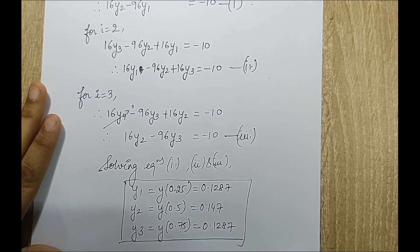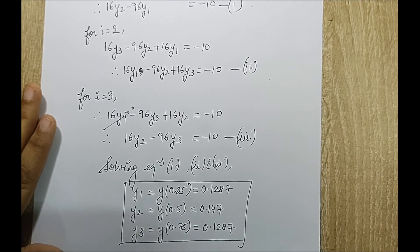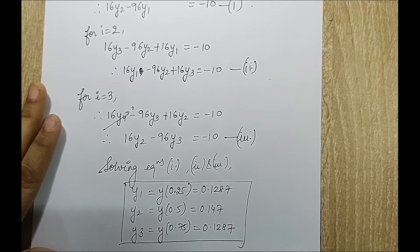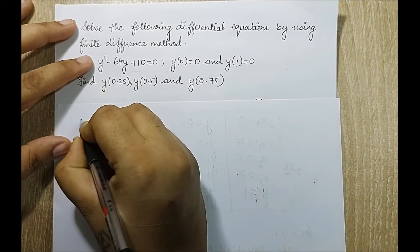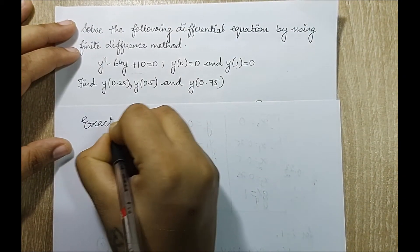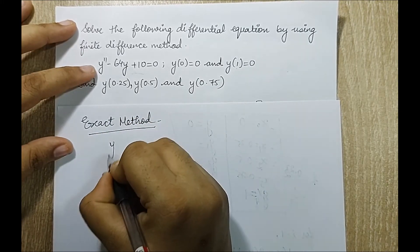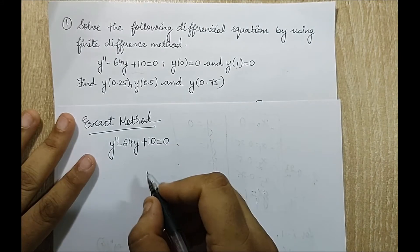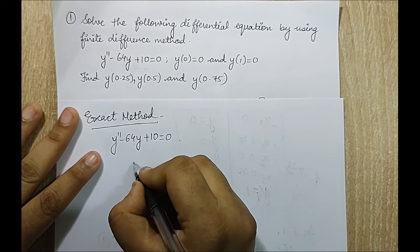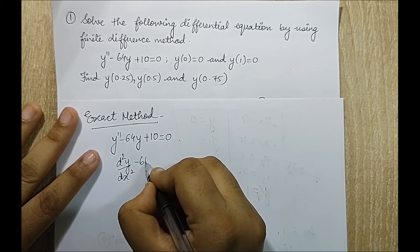FEA is a self-check type of subject where you can always verify answers using another method or formula to confirm they are close and correct. Now I will solve the exact method. The equation is: d²y/dx² minus 64y plus 10 equals 0.